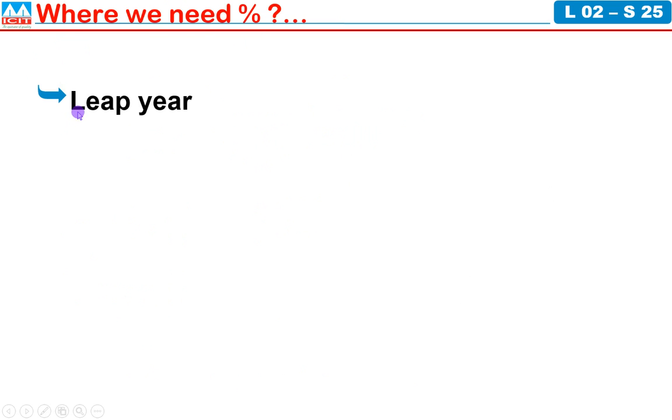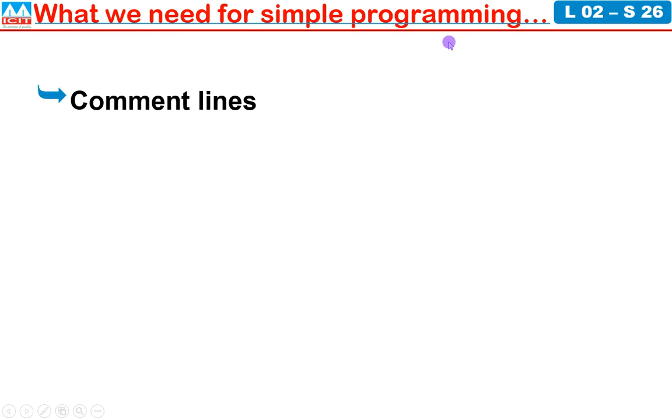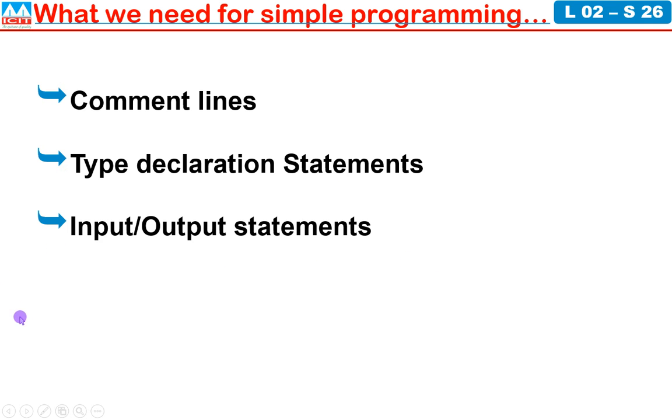Where we need modulo? Leap year program: any year that is divisible by 4 is leap year. 4 divides with remainder 0, that is leap year. Odd or even: 2 divides with remainder 0, that is even number, otherwise it is odd number. Prime number: a number which is divisible by 1 and itself is called prime number. What do we need for simple programming? Simple programming needs comment lines, type declaration statements, input output statements like printf and scanf, and arithmetic statements. These are the concepts we need to complete simple programming. These concepts will be completed in the next class. Bye bye.